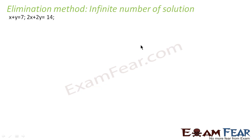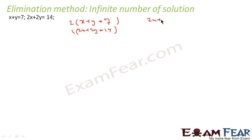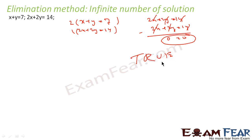Now let's look at the elimination method when there are infinite solutions. Take x plus y equals 7 and 2x plus 2y equals 14. To make coefficients equal, multiply the first equation by 2: we get 2x plus 2y equals 14. Both equations are now identical. Subtracting gives 0 equals 0, which is a true statement — so this system has infinite solutions.